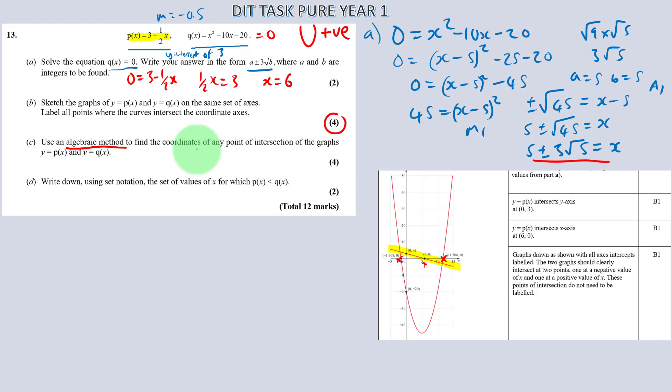Now it says use an algebraic method for part c. Use an algebraic method to find the coordinates of any points of intersections of the graphs y equals px and y equals qx. Well when these two lines intersect they must equal. So literally all you need to start off with to get one mark is write 3 minus a half x equals x squared minus 10x minus 20. Now if you ever get a question like this it really should just be a banker. So anyway, what we're going to do, let's plus a half x on both sides and set that to zero.